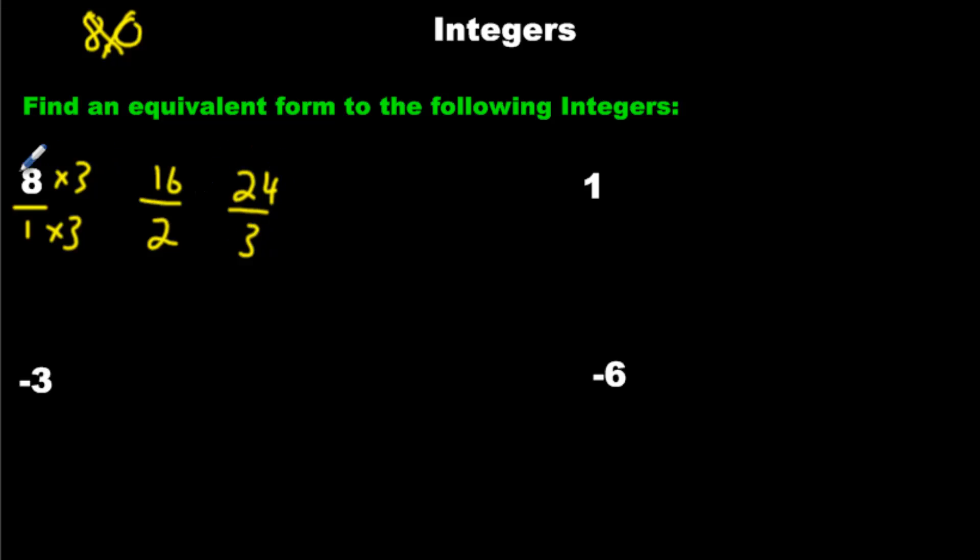Which is also equivalent to 8. We can also times by 4. If we did that, we're going to get 32 over 4, and that is also equivalent to 8. These are all equal to one another, and they are all the value, they all have a value of 8.